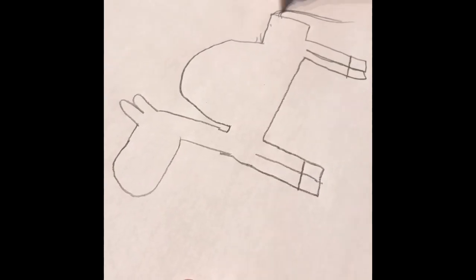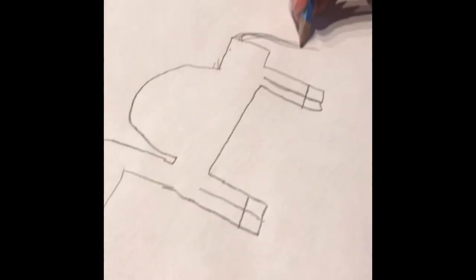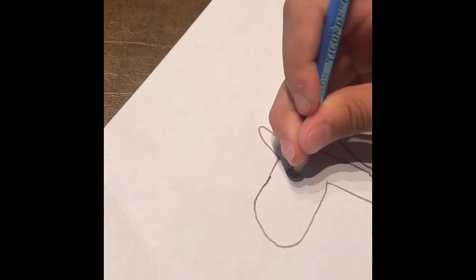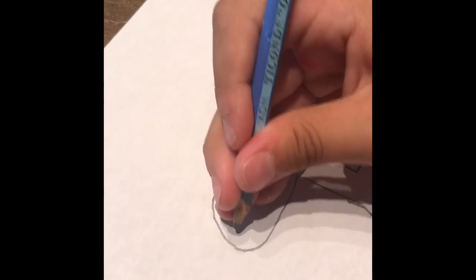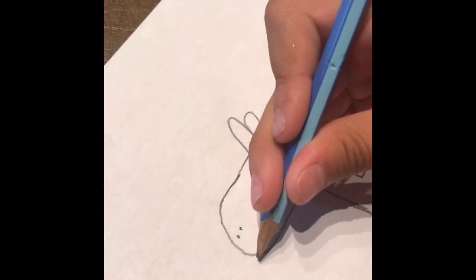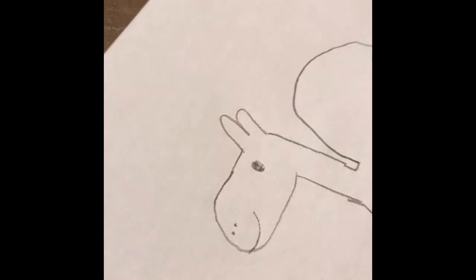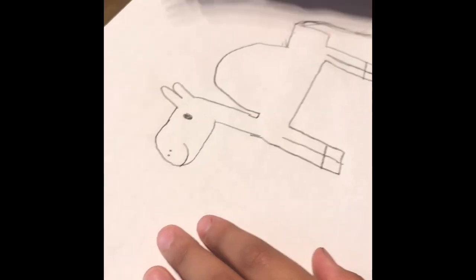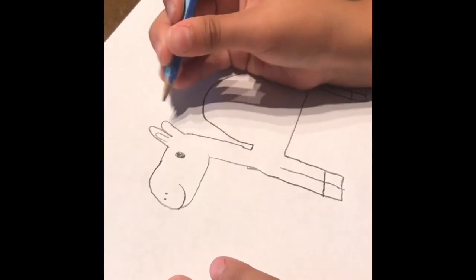Then do a long tail. And a little hair there. And then his eye or her eye. Then her two nostrils. Then her smiley mouth. Then draw the inside of the ears.